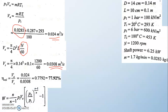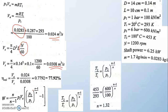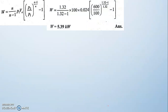For indicated power, we use [n/(n−1)] · P1 · VA · [(P2/P1)^((n−1)/n) − 1]. P1 is given, VA = 0.024, and P2/P1 are known. To find n, from T2/T1 = (P2/P1)^((n−1)/n): substituting 453/293 = (600/100)^((n−1)/n), taking log on both sides gives n = 1.32. Substituting n = 1.32 into the indicated power equation gives indicated power = 5.39 kW.